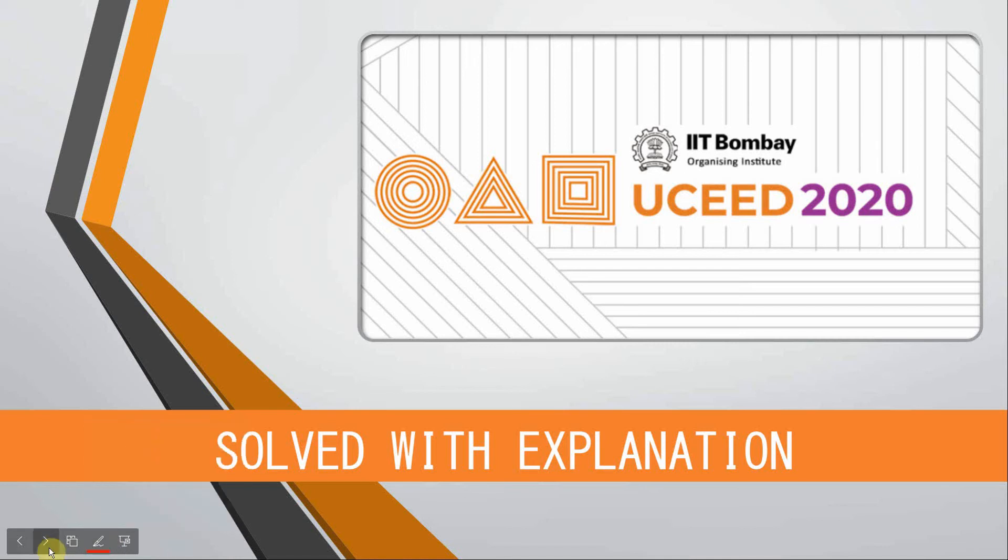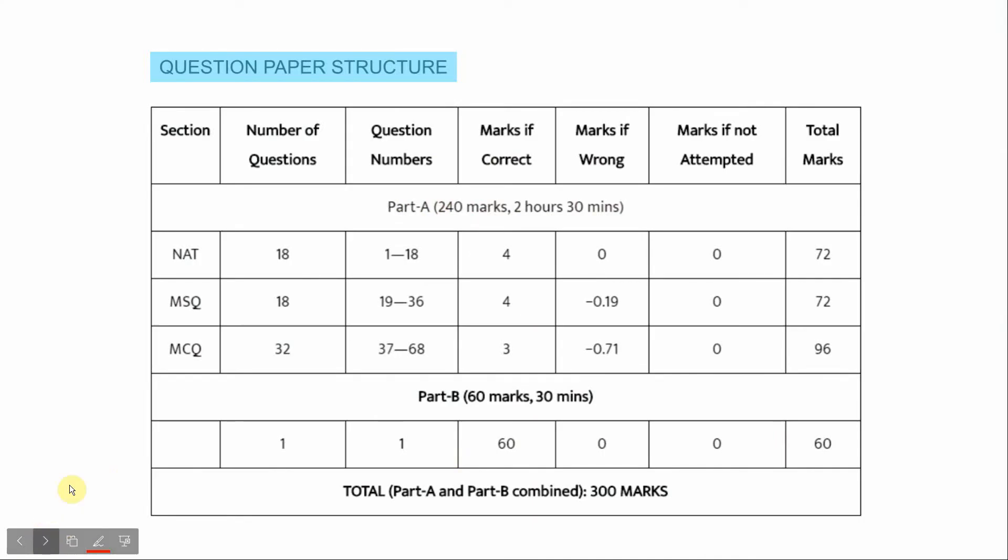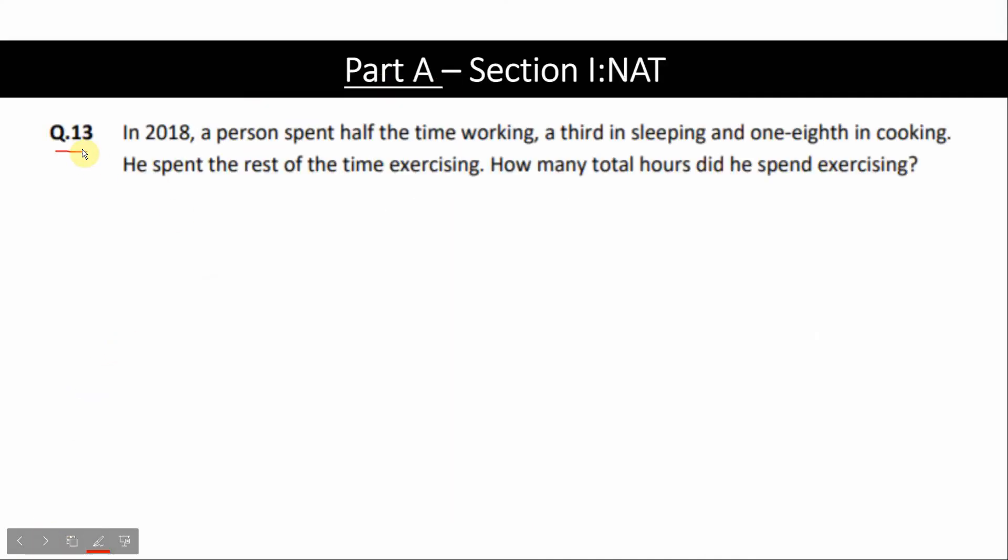Hey namaste, Part A Question 13. In 2018, a person spent half the time working, a third in sleeping, and one-eighth in cooking. He spent the rest of the time exercising. How many total hours did he spend exercising?